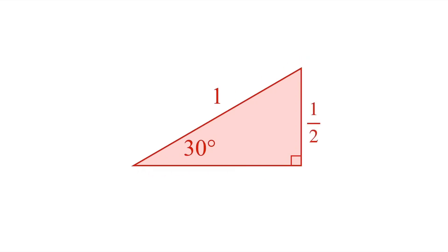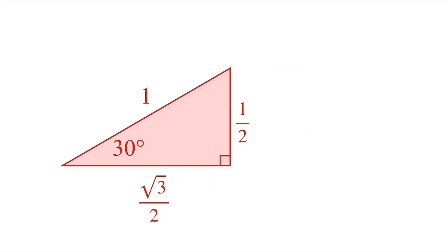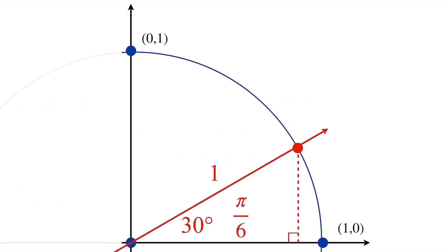The longer leg is always the shorter leg times root 3, so this is root 3 over 2. So, if we take a look back at our unit circle, to get to this point right here, we need to go over root 3 over 2 and up 1/2, which means this point here is (√3/2, 1/2).